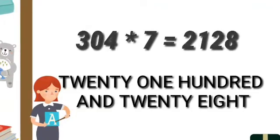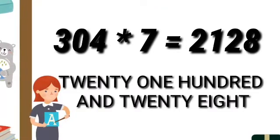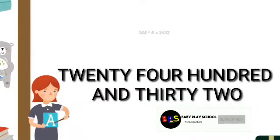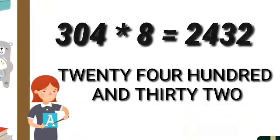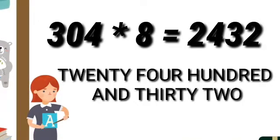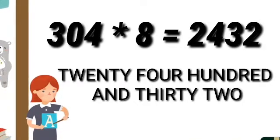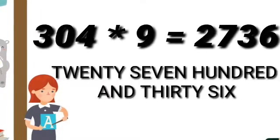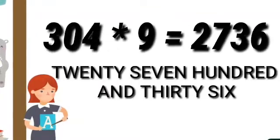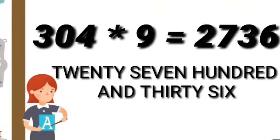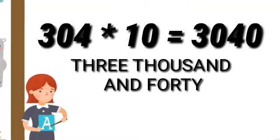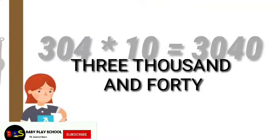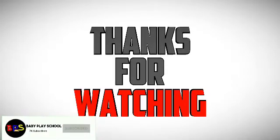304 sevens are 2128. 304 eights are 2432. 304 nines are 2736. 304 tens are 3040.